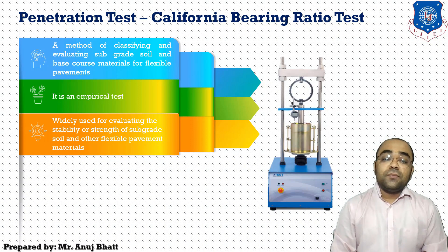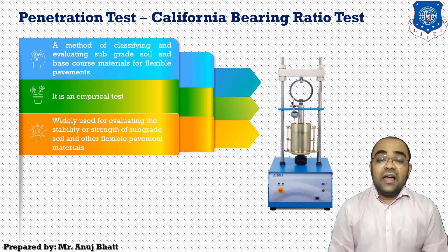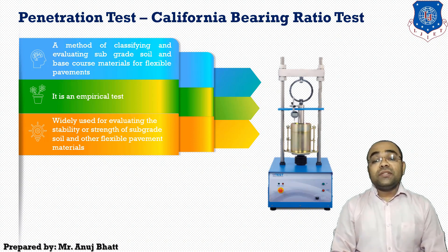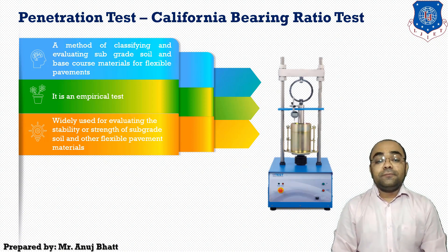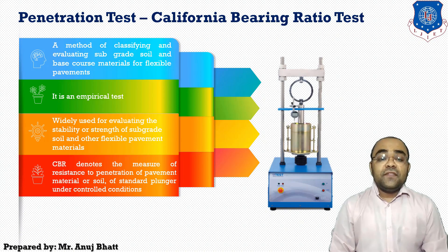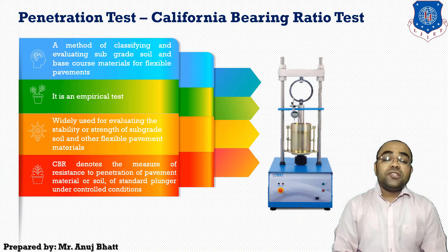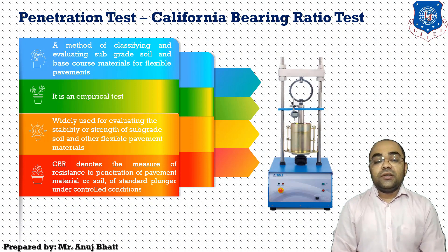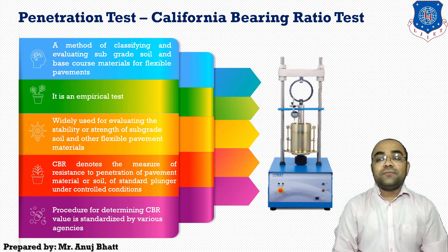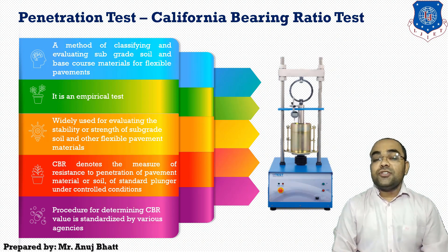This empirical test also measures the strength of the material, and it has generally been noted that the CBR value is not a true representation of the resilient modulus. The CBR value denotes the measure of resistance to penetration of pavement material or soil by a standard plunger under controlled conditions. The procedure for determining the CBR value is standardized by various agencies as per each country's topographical situation.